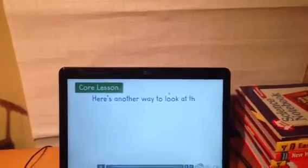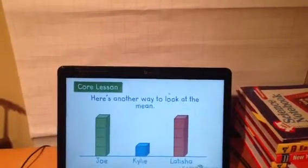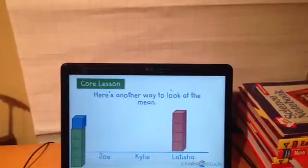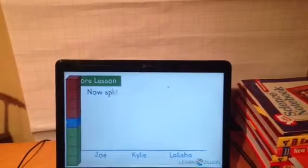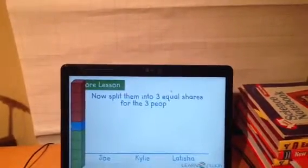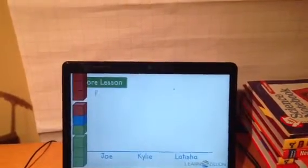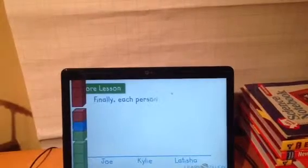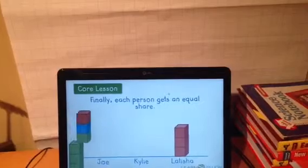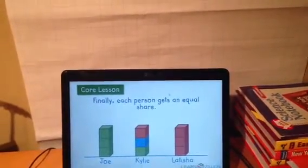Here's another way to look at the mean. If Joe, Kylie, and Letitia want to share the blocks, they could begin by putting all the blocks together. Next, they need to split them into three equal shares for the three people. We're dividing the whole set into equal shares. Finally, each person gets an equal share. Now, all three people have three blocks each. So the mean of the blocks is three.